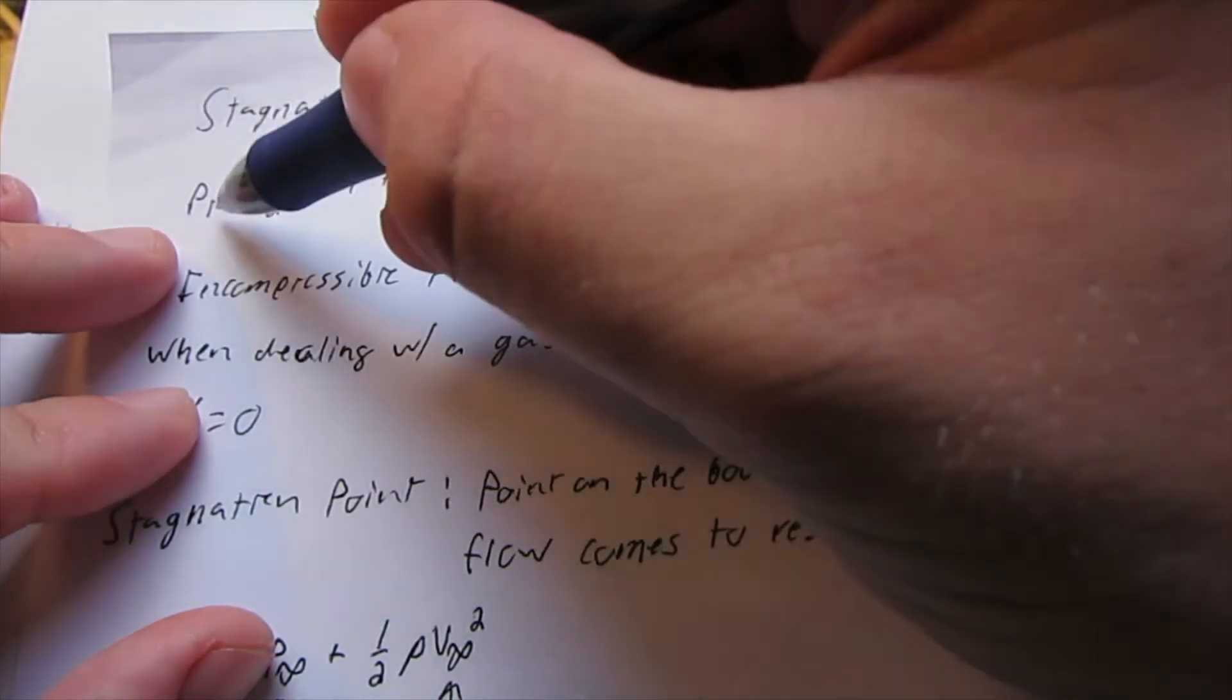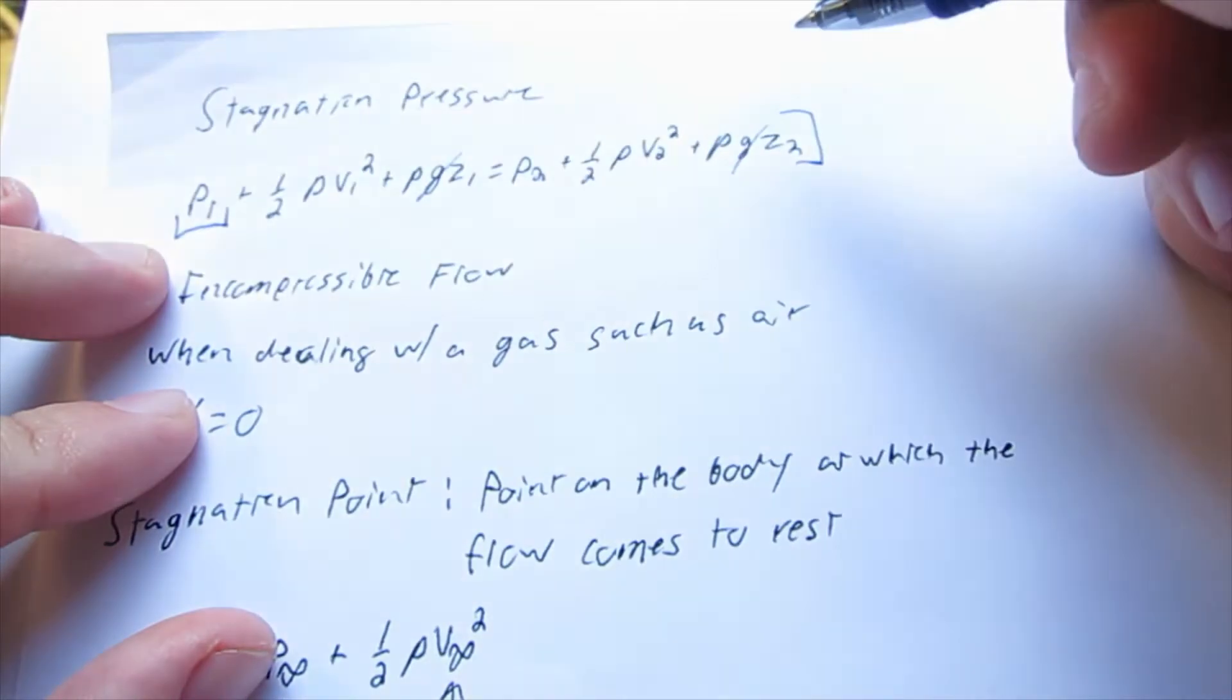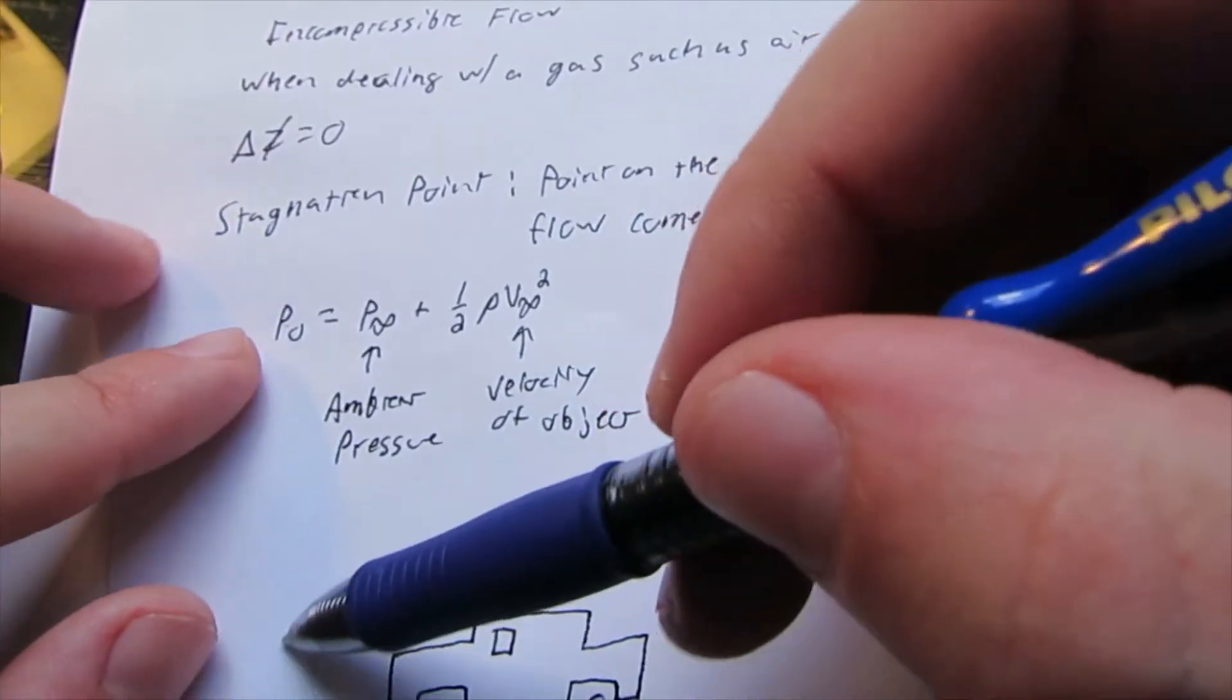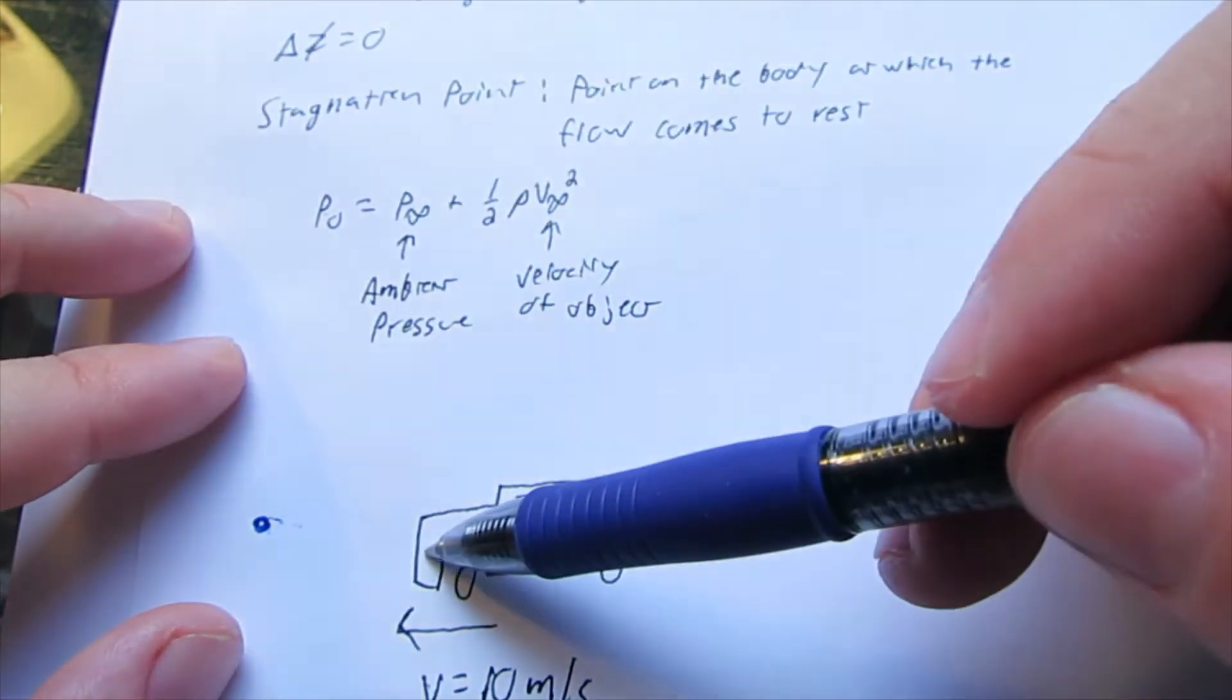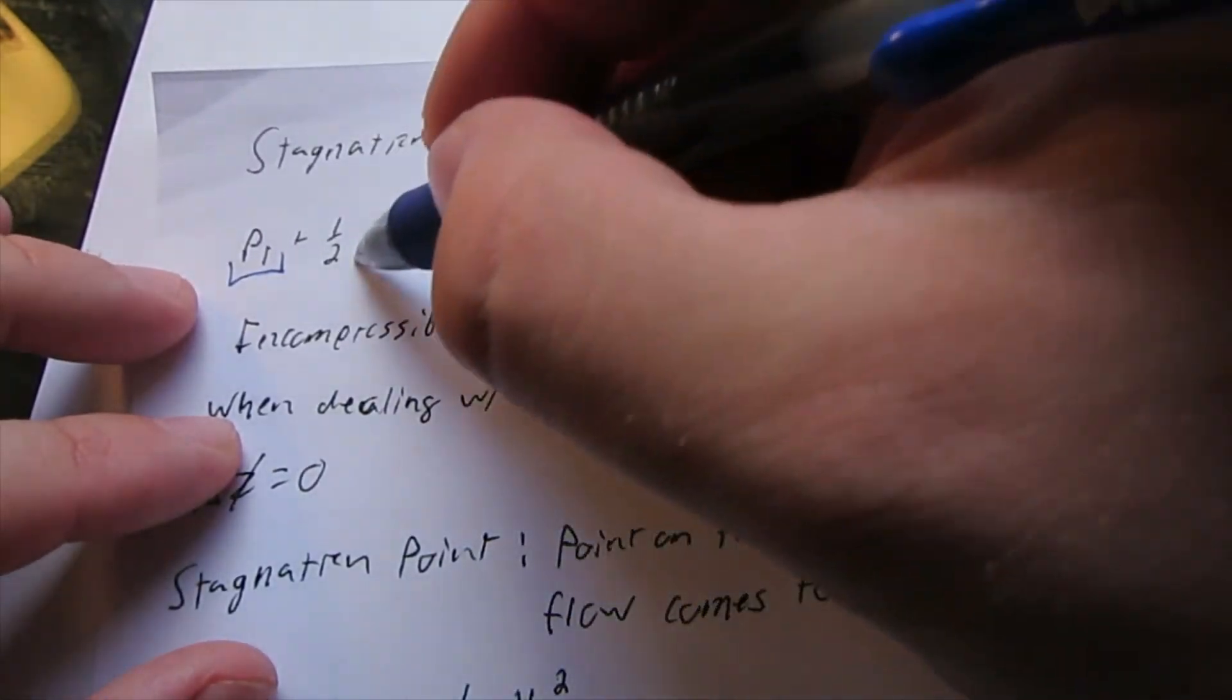Our P₁, let's consider that our stagnation pressure. The velocity of the air out here is zero - that air is not moving until V₂ hits it, so this term can cancel out.